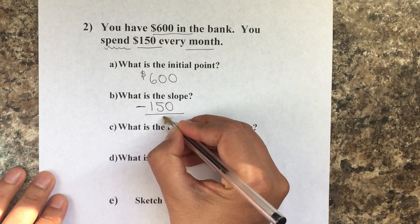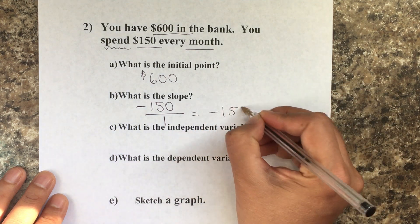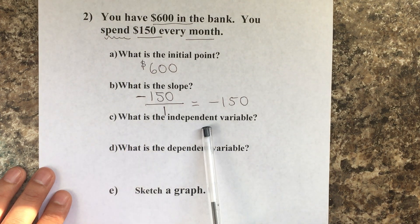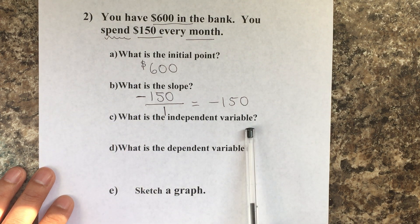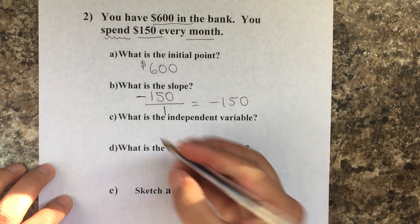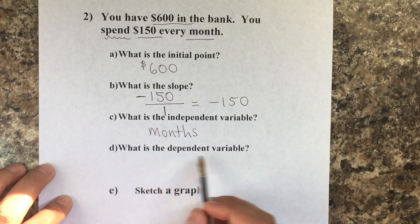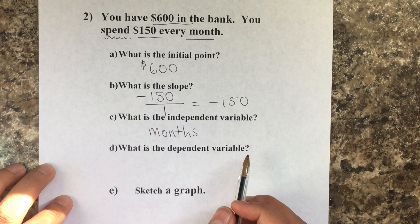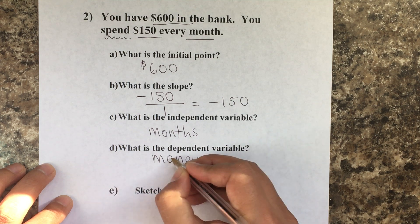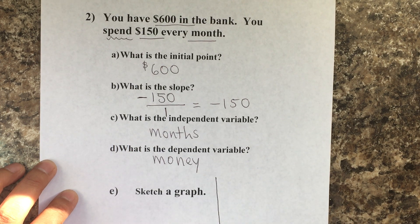For every month — if they ask you to simplify, it's just negative 150. What is the independent variable? For x, it would be months. What is the dependent variable? That will be money — the money that you have left.